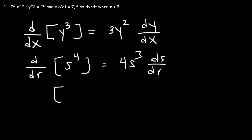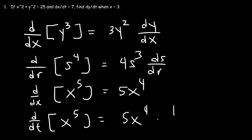Let's say if we want to differentiate x to the 5th power with respect to x. This will be 5x to the 4th times dx over dx, which will cancel, and we'll simply get 5x to the 4th. Now, if we want to differentiate x to the 5th with respect to time, it's going to be 5x to the 4th times dx dt.